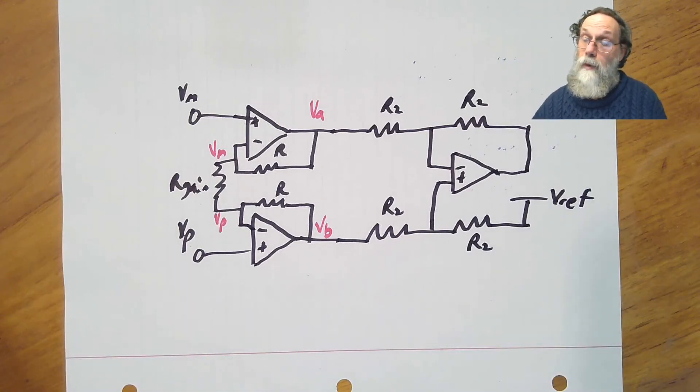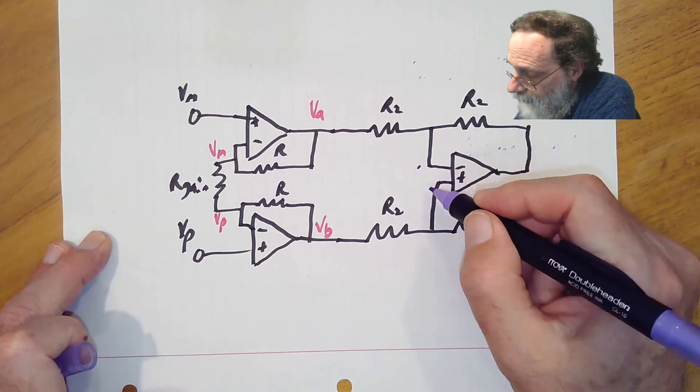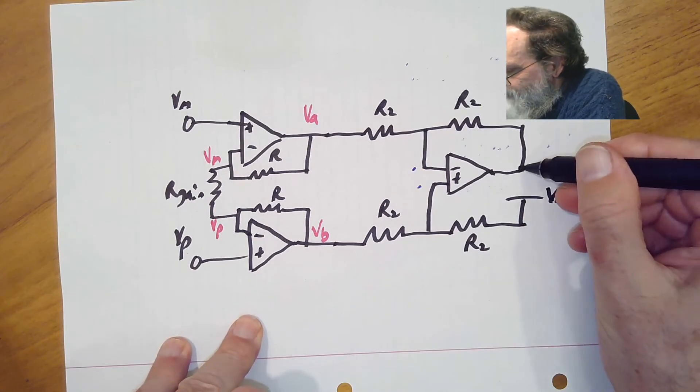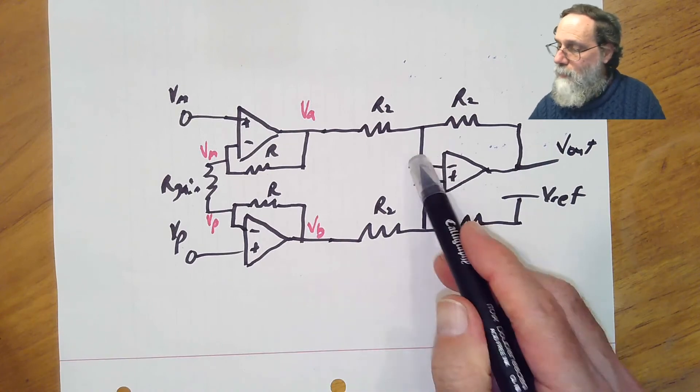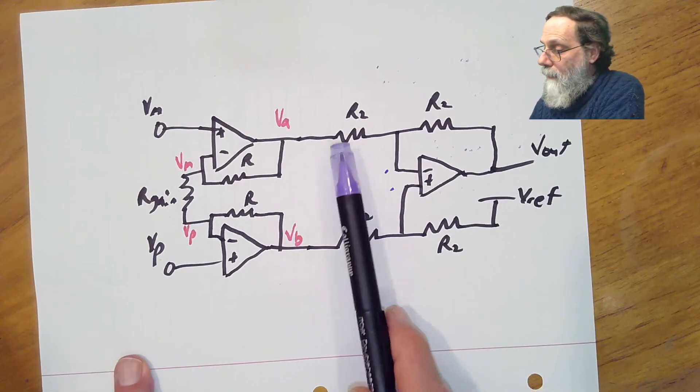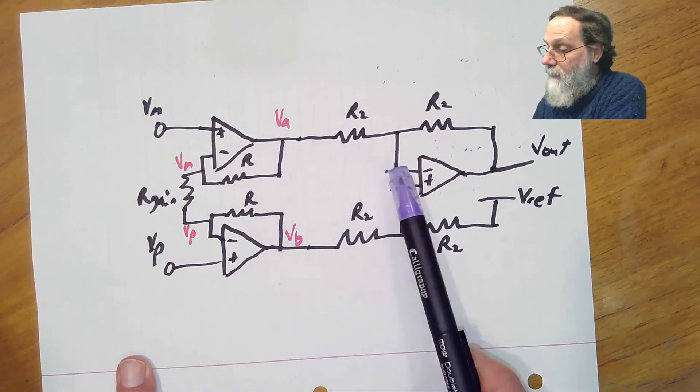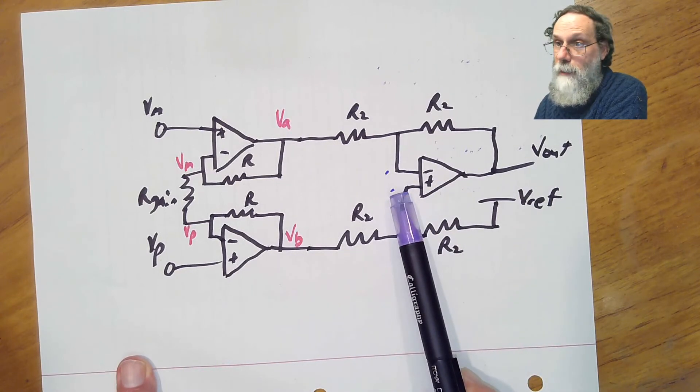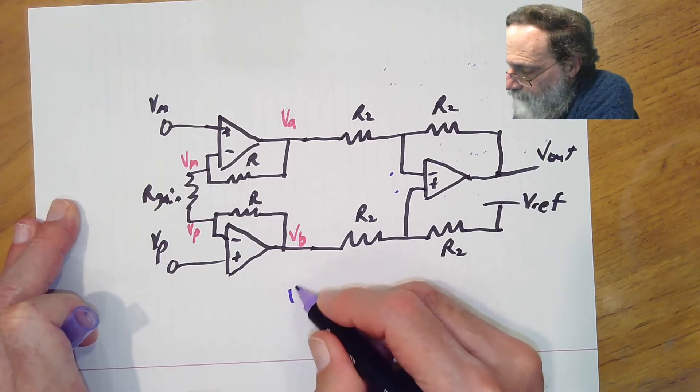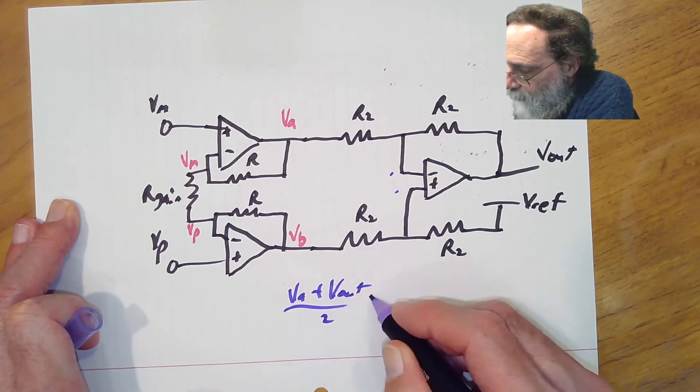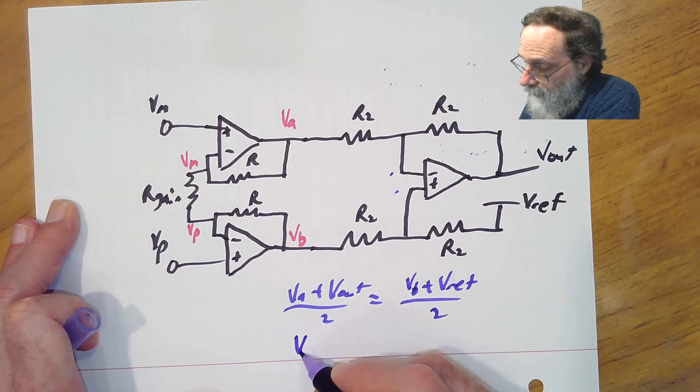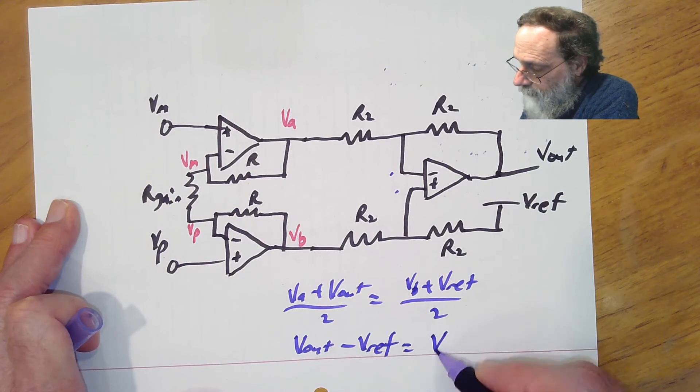Now, these resistors don't have to all be the same size, but they usually are. So let's just call them all R2. What does this thing do? Well, these two points here and here are going to have the same voltage. That's a negative feedback op amp. I forgot to label this one as Vout. So these two points are going to be the same. So we can just use the voltage divider formula to figure out what those are. And since this thing is a voltage divider with two identical resistors, the point here is just going to be the average of these two points. The point here, where it's the positive input, is just going to be the average of these two points. So what we've got is that Va plus Vout over 2 is equal to Vb plus Vref over 2.